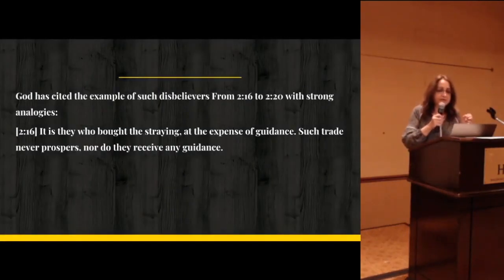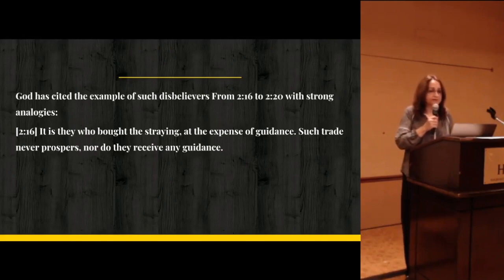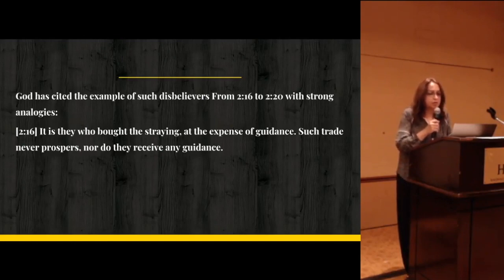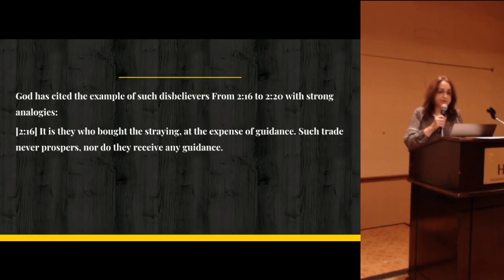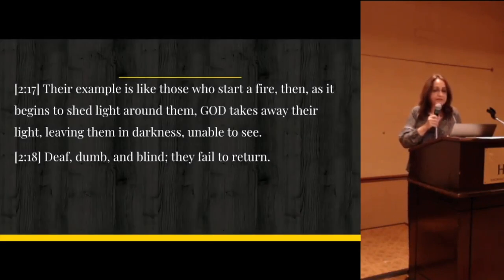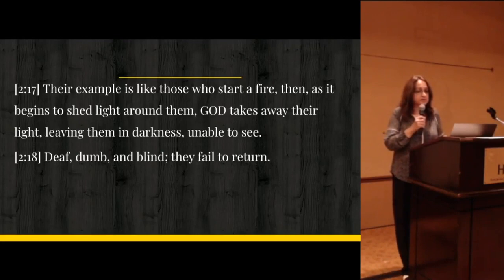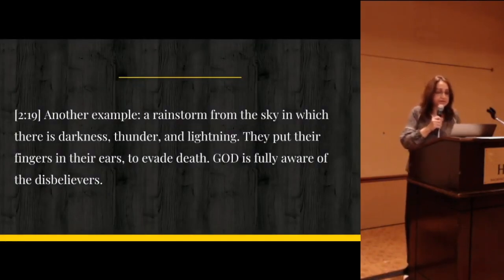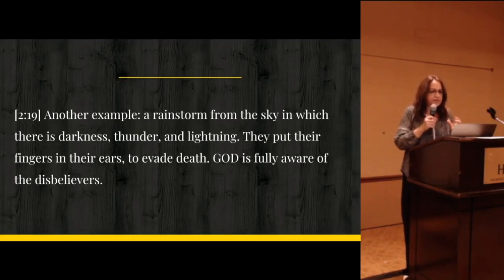God has guided us by sending his light to see the right path. If we turn ungrateful and slide back, God can take away this light — who can then guide us? God has cited examples of disbelievers from 2:16 to 2:20. 'It is they who bought straying at the expense of guidance; such trade never prospers, nor do they receive any guidance. Their example is like those who start a fire — then as it begins to shed light around them, God takes away their light, leaving them in darkness, unable to see. Deaf, dumb, and blind, they fail to return.' Another example: a rainstorm from the sky with darkness, thunder, and lightning. They put their fingers in their ears to evade death. God is fully aware of the disbelievers.